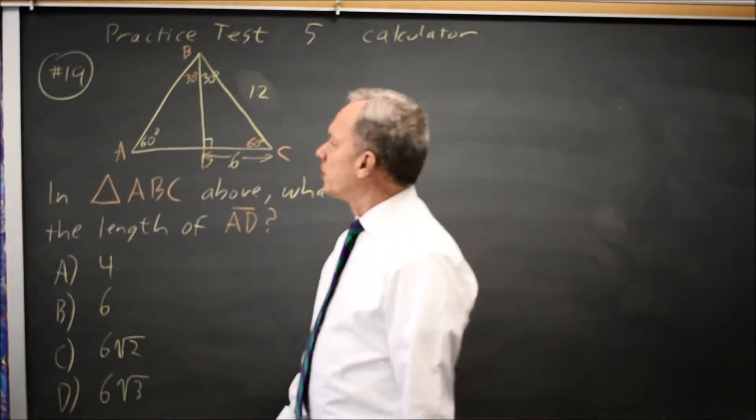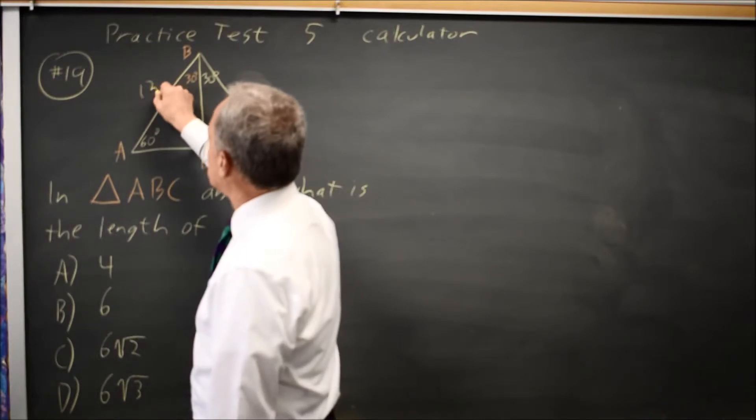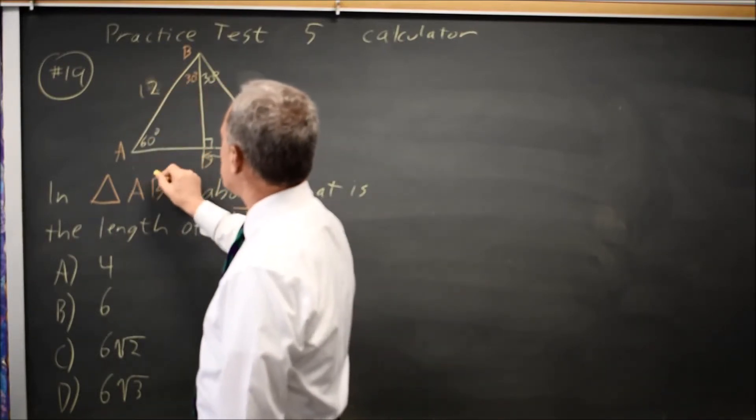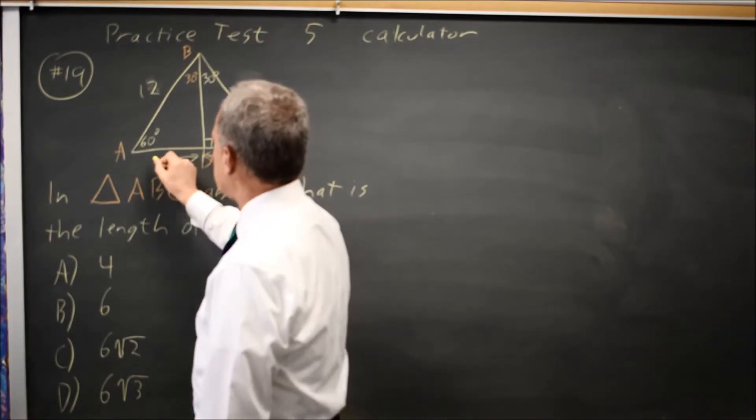Also, equilateral triangle, all three sides are the same. They're 12. This entire side is 12. So this half is 6.